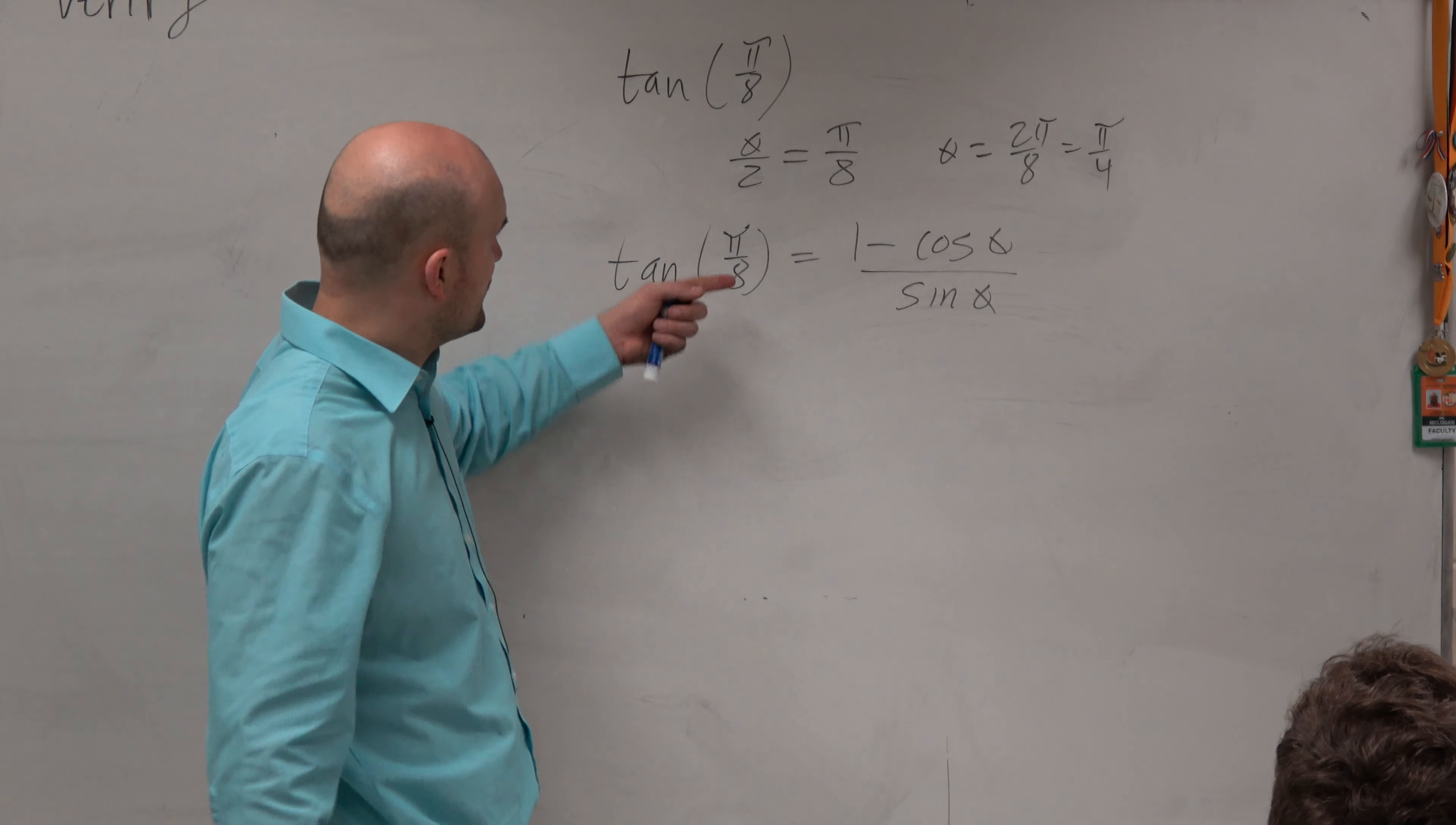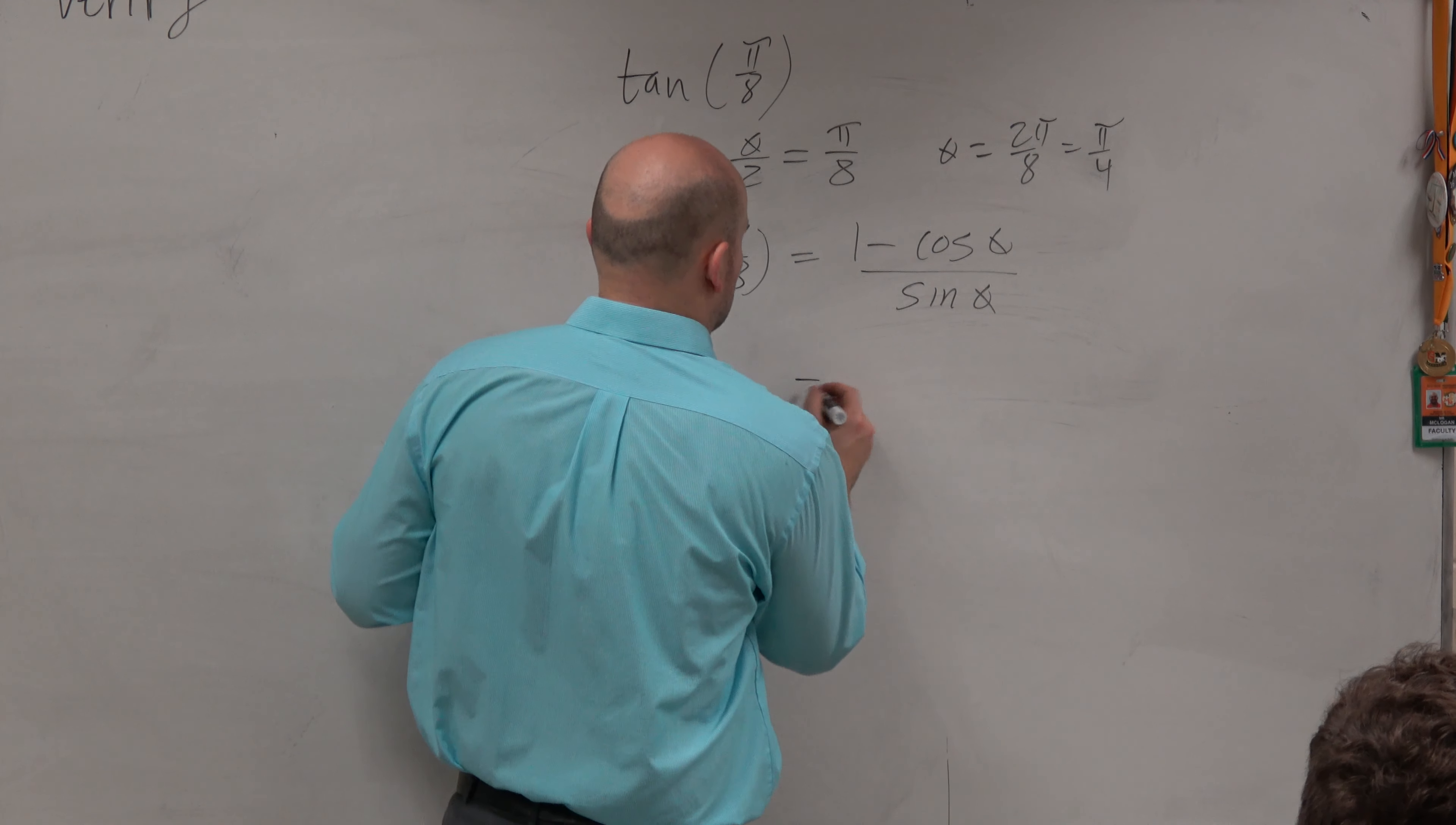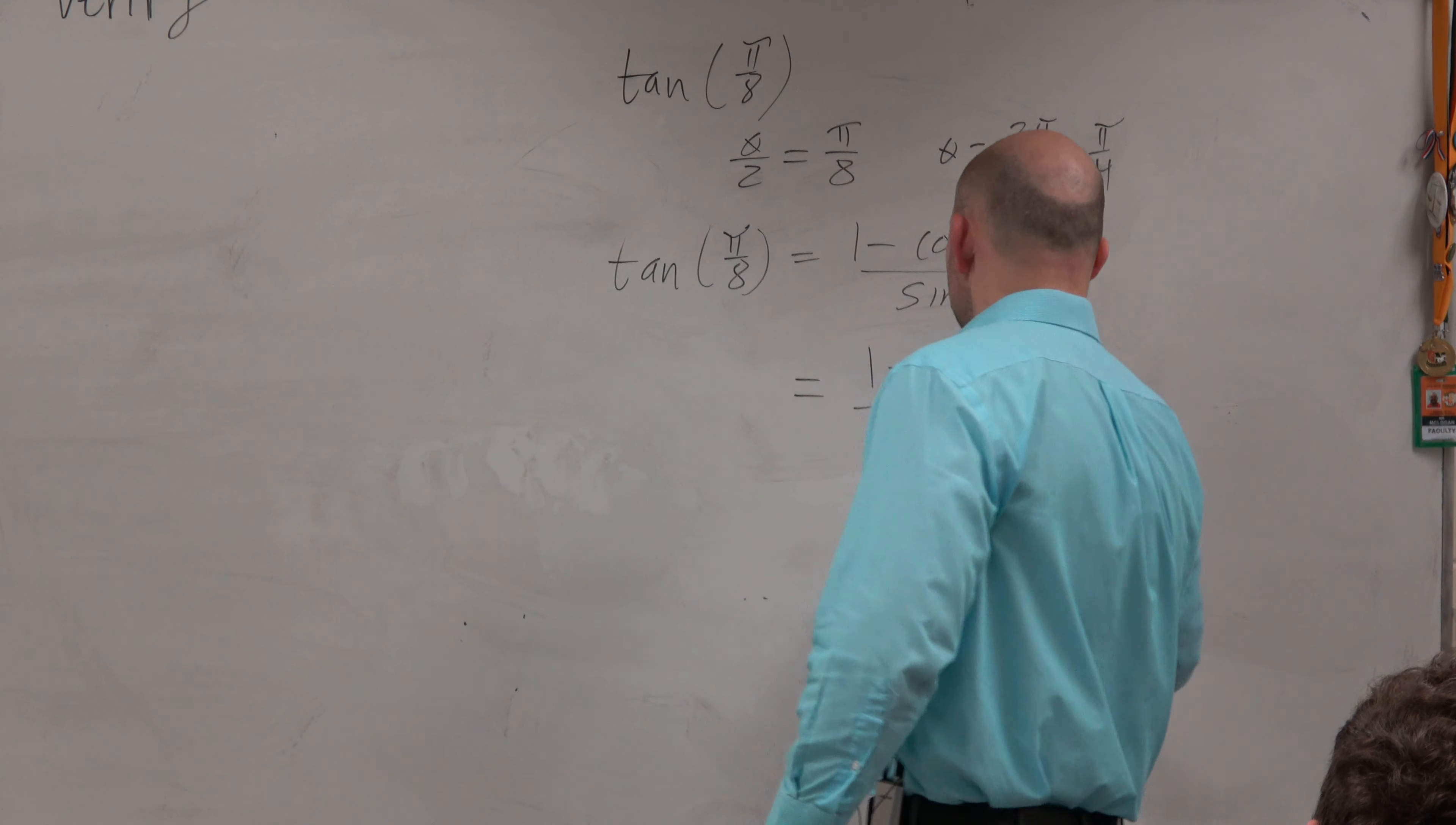If we're going to let the half angle be pi over 8, that means theta is pi over 4. I have 1 minus square root of 2 over 2 divided by square root of 2 over 2.